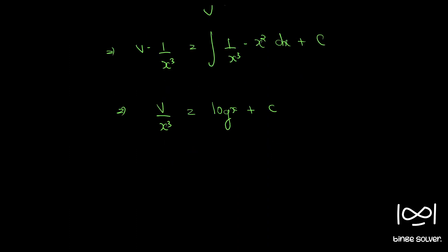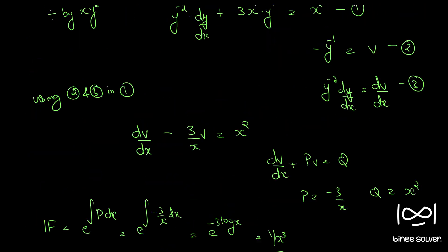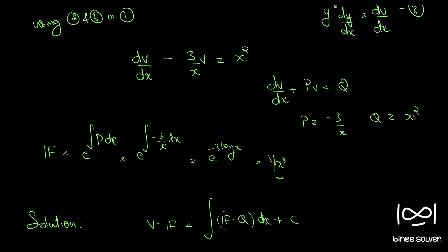If you substitute for v from equation 2, we know v = -1/y